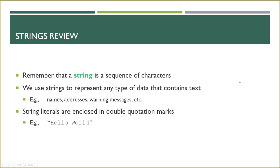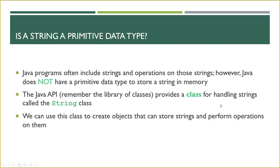Now let's talk about strings. A string is just a sequence of characters, and we use strings to represent any data that contains text — things like names, addresses, messages to the user. String literals are enclosed in double quotation marks, which tells Java this is a string literal. Is a string a primitive data type? Primitive data types can only store one value at a time, they don't have attributes or methods. So — string is not a primitive data type in Java.